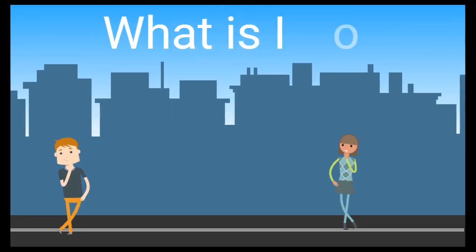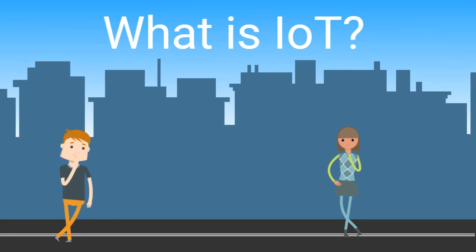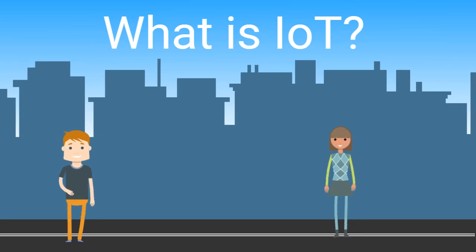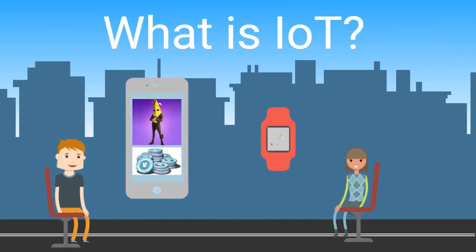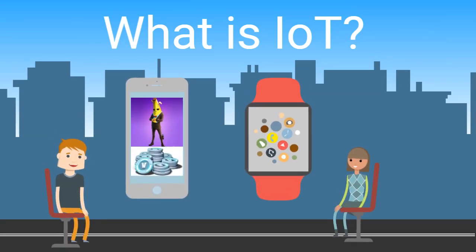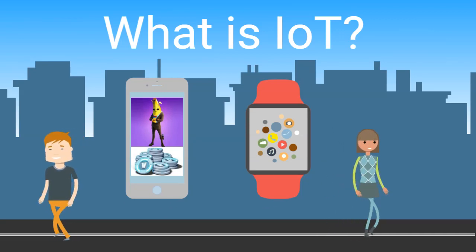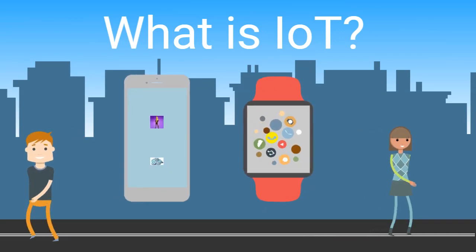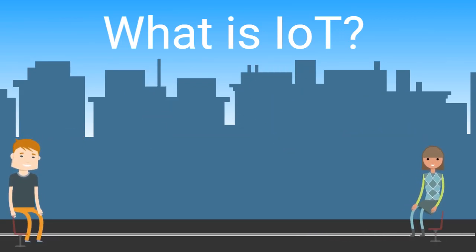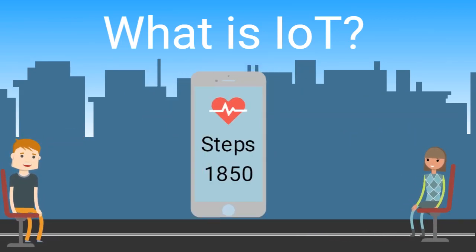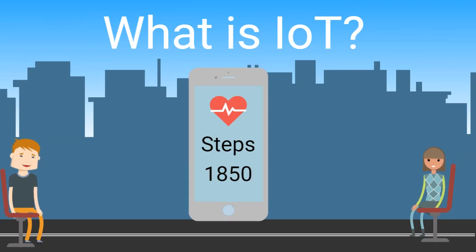So what is IoT, which means the Internet of Things? Well the Internet of Things is made up of devices, from simple sensors to smartphones and wearables, all connected together. For example, your smartwatch tracks your steps and health during the day and shows you that information on your phone.